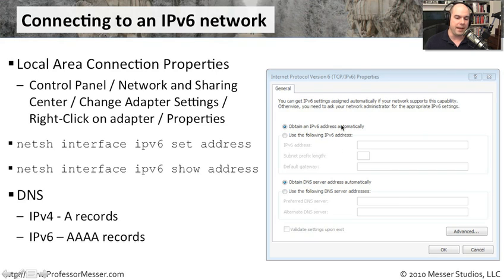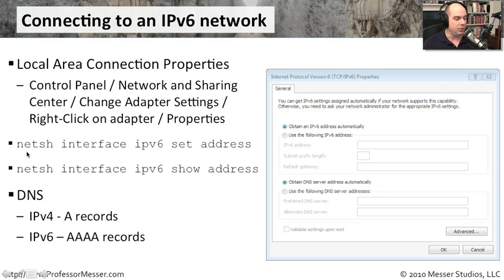Or we can use the automatic settings and have those retrieved automatically, assuming you have technology in place to provide an automatic IPv6 address, which these days isn't always the case. You can also do this from the command line — using those same NetSH commands we used for IPv4, except using the IPv6 setting to configure the address.